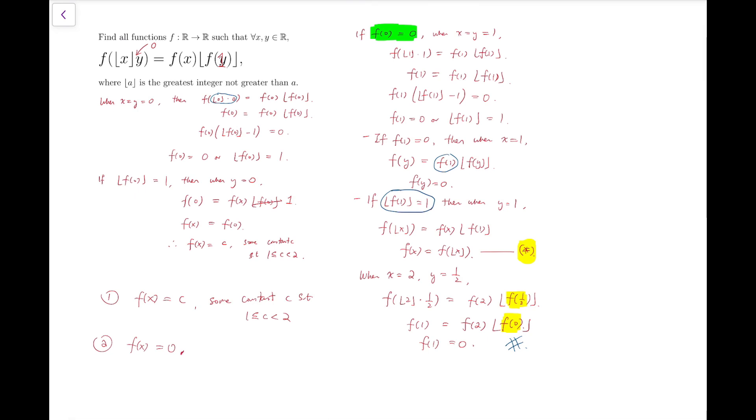And you can check both of them. For the first solution, the left hand side is c equals c times the floor function of c, which is c times 1, so it's correct. And for the second solution, we have 0 equals 0 times the floor function of 0, which is obviously true. So these two functions are our solutions.